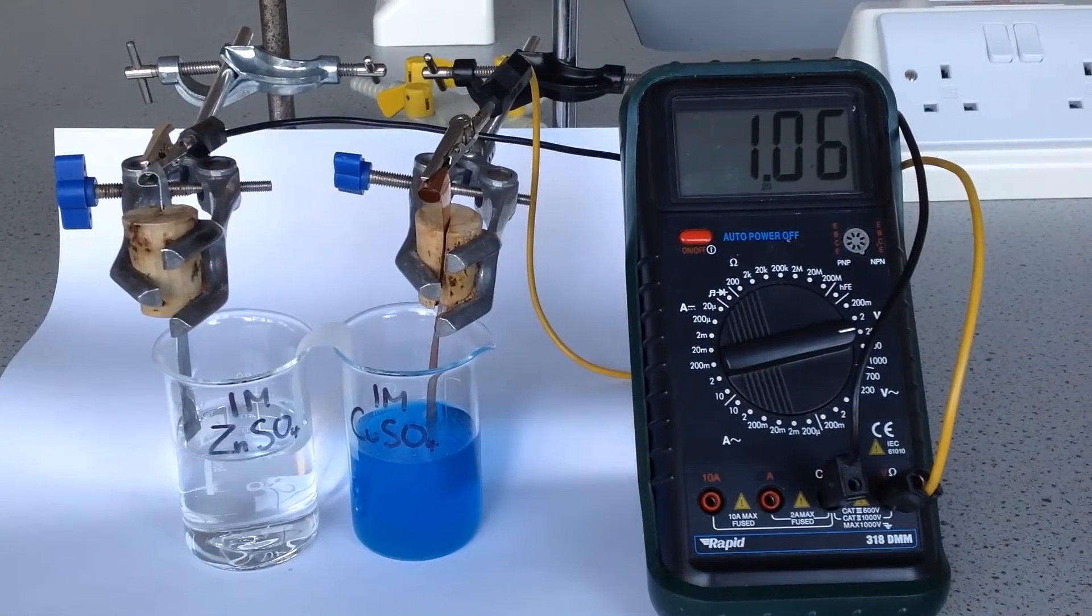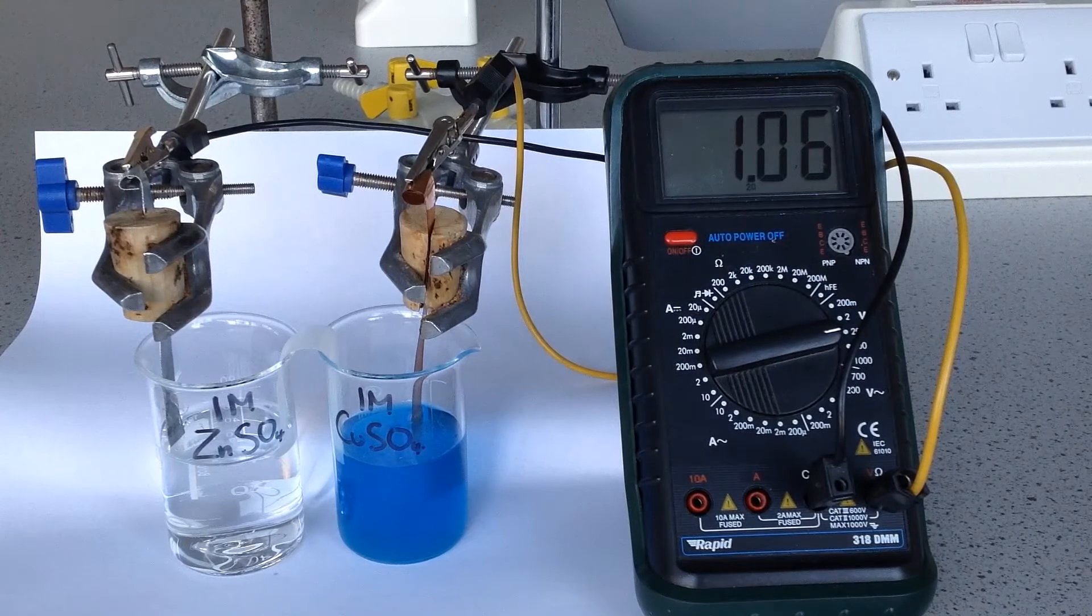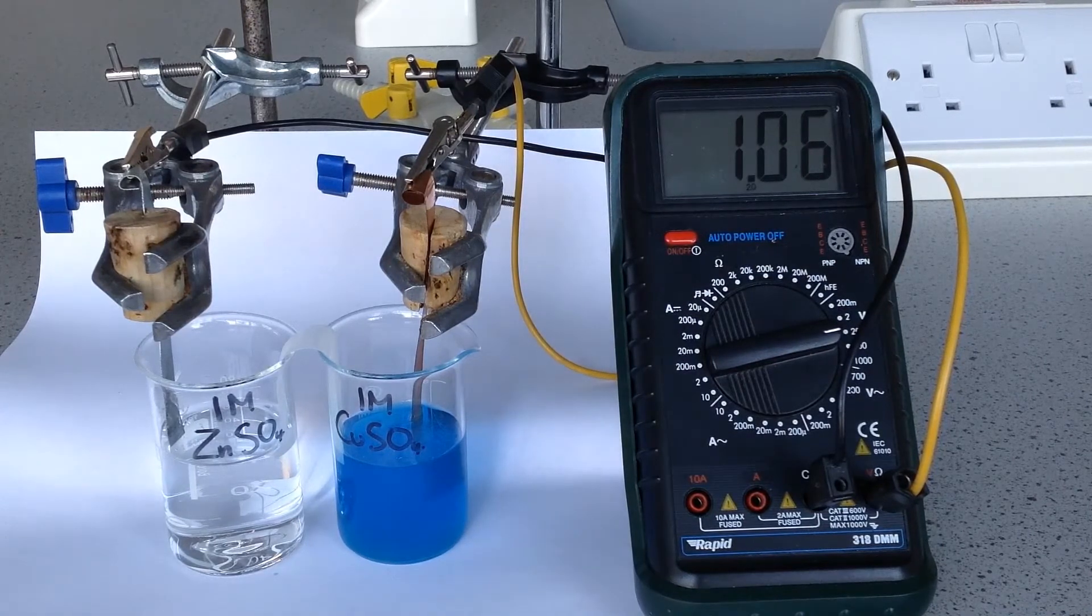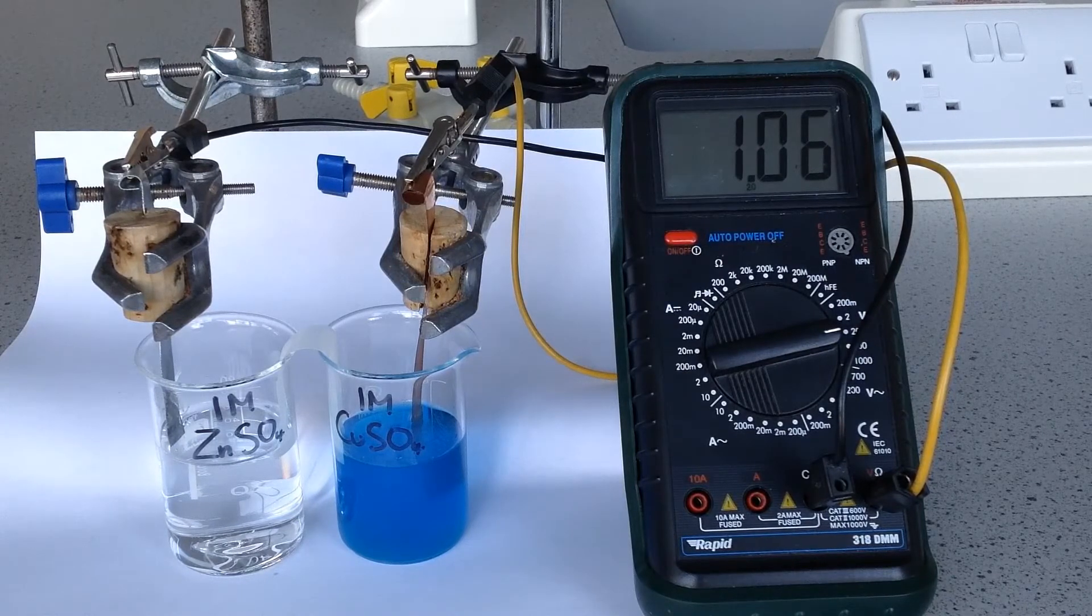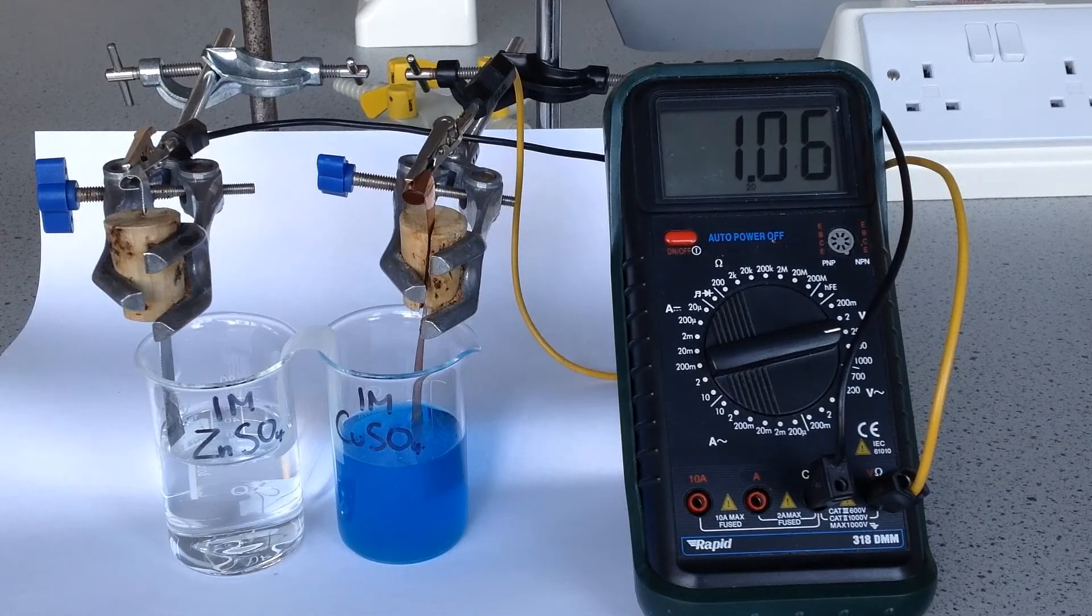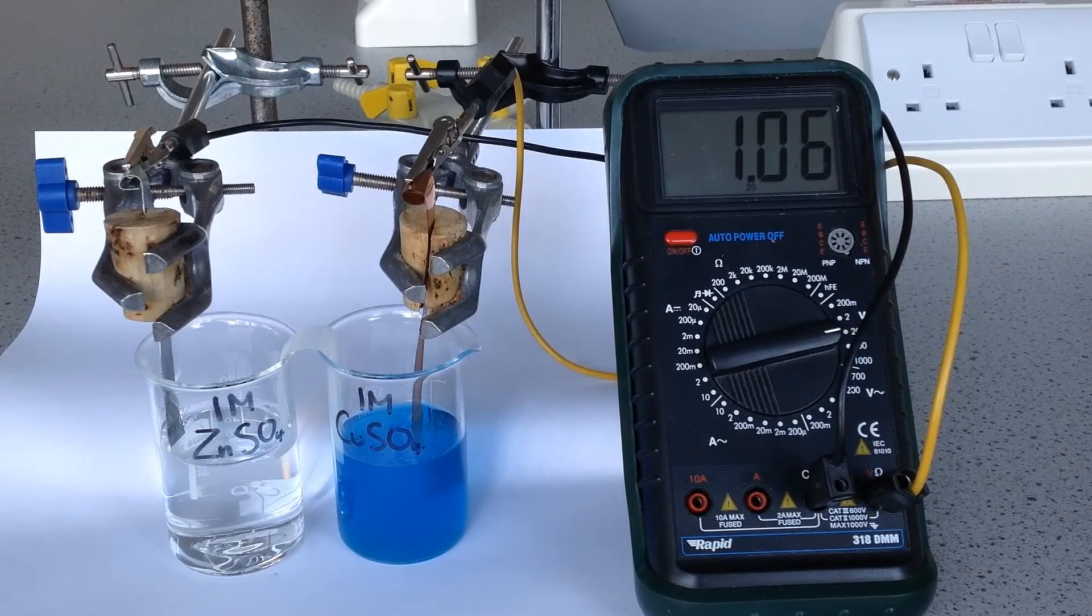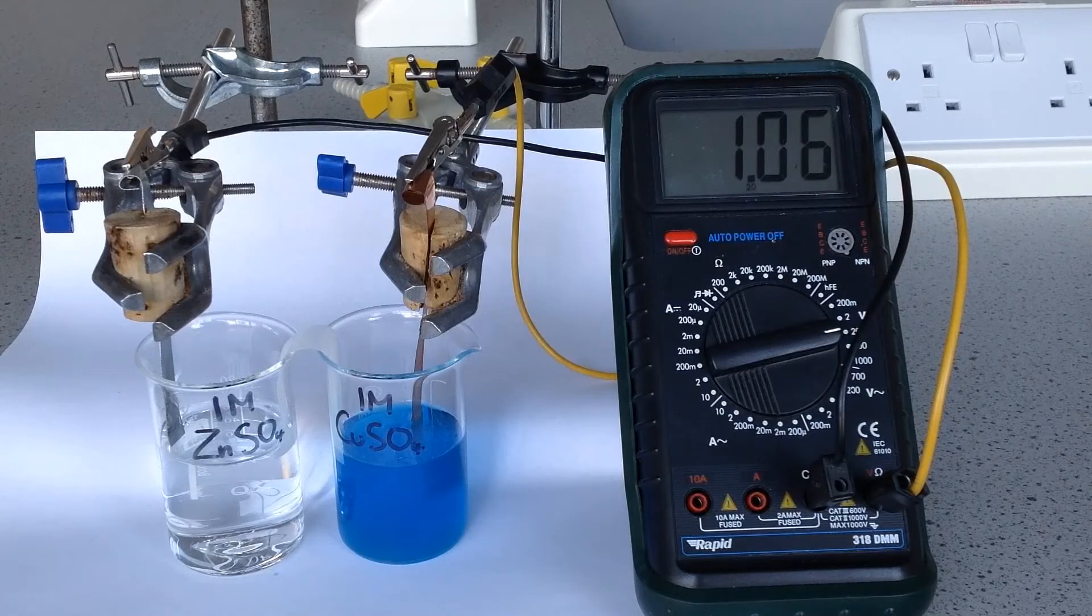Now just a brief note on the terminals here, I happen to have the copper in the positive terminal and the zinc in the negative. The cell potential should always be positive and that indicates to you that the more positive half cell is actually correctly connected to the positive terminal of the voltmetre.